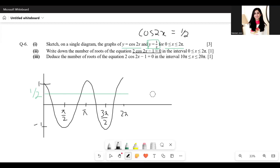You get it by equating these two graphs. Cos 2x equals half, and when you rearrange it, you actually get this equation 2 cos 2x minus 1 equals 0. In other words, they're asking for the number of points of intersection between these two graphs.